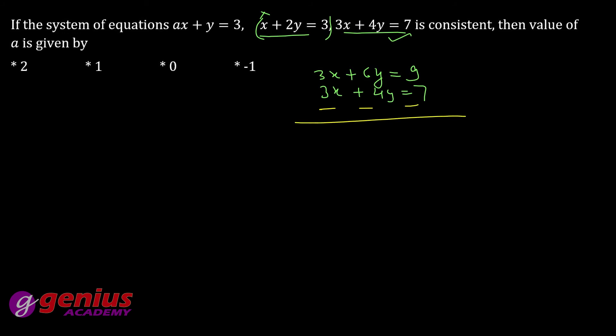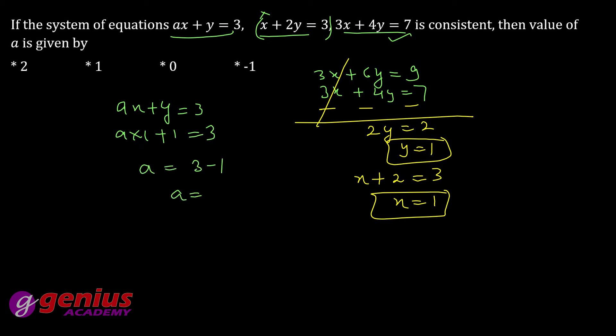Ye aapka cancel, ye ho gaya 2y aur ye bhi 2. Y kitna aaya aapke paas 1, to ek kisi mein bhi daal dijiye upar x plus 2 into 1 equal to 3. To x bhi kitna aaya aapka 1. x1 y1 aap kisi equation mein bhi daal dijiye, ax plus y equal to 3 ye wali equation hai. A ki jagah 1 y ki jagah bhi 1. To 3 kitna aaya aapka 3 minus 1, a kitna aaya aapka 3 minus 1, 2. To final is this.